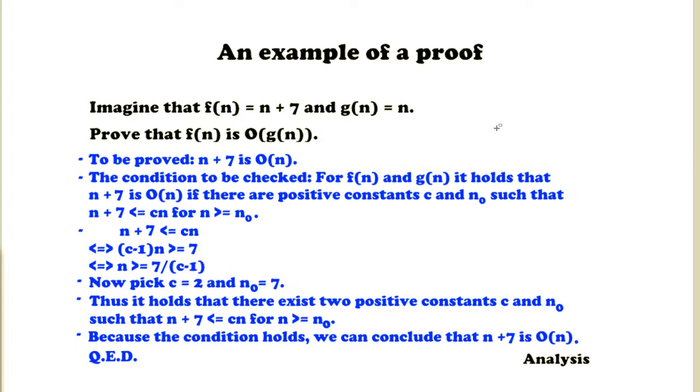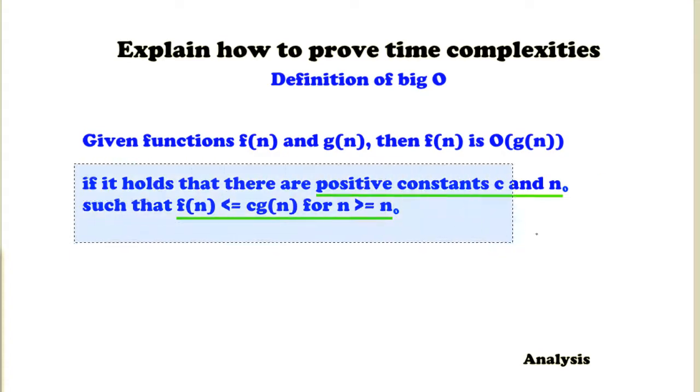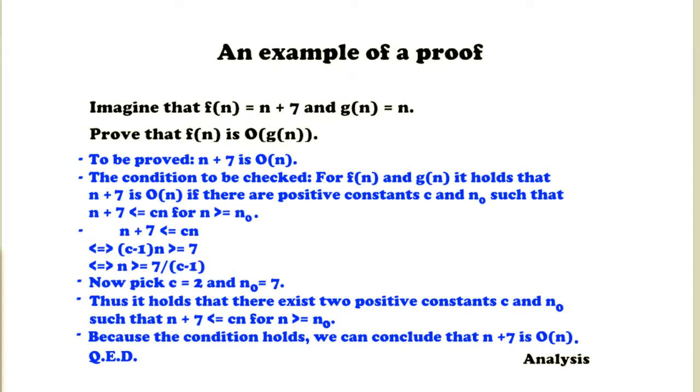The condition to be checked is for f(n) and g(n) it holds that n plus 7 is O(n) if there are positive constants c and n₀ such that n plus 7 is smaller equal to c times n for n greater or equal to n₀. So what I did was I took this condition and I filled it in. That's it.